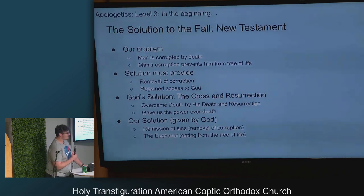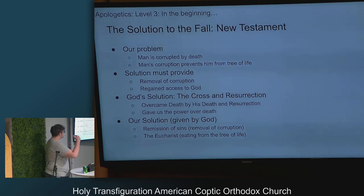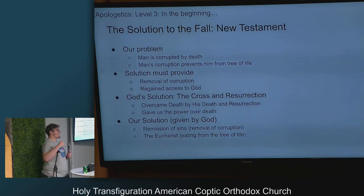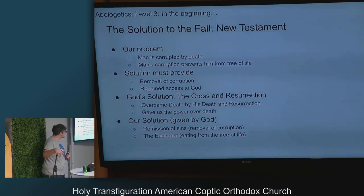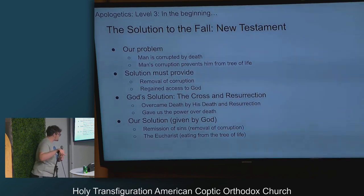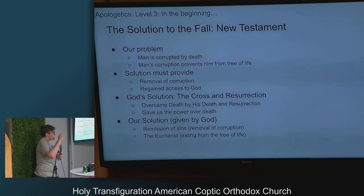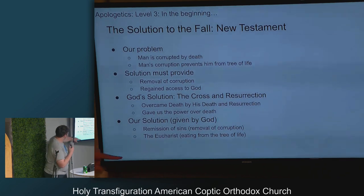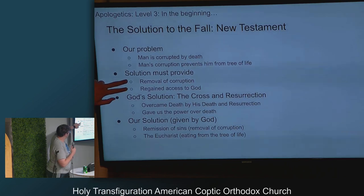Now the New Testament: what's our problem? Man is corrupted by death, and man's corruption prevents him from the tree of life. God doesn't like that. The solution must remove our corruption and give us access to God again. God's solution was the cross and the resurrection — Christ overcame death by his death, then resurrected, and that gave us power over death. Our solution given through the cross and resurrection is remission of sins — a removal of corruption — and then the Eucharist, which is eating from the tree of life, directly solves our whole problem.